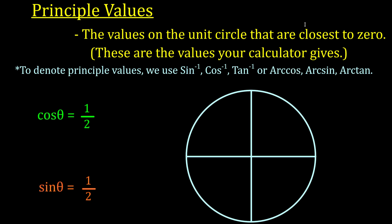In this lesson, we're going to talk about principal values for sine, cosine, and tangent. The principal values are the values on the unit circle that are closest to zero. When you're finding an angle using inverse sine, inverse cosine, or inverse tangent, those closest-to-zero values are the principal values — and they're the ones your calculator gives.